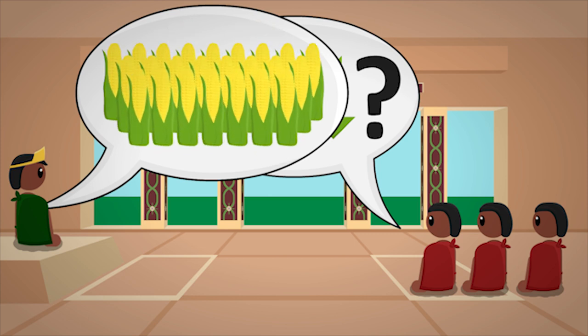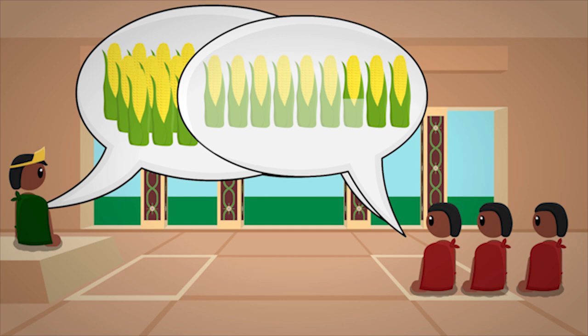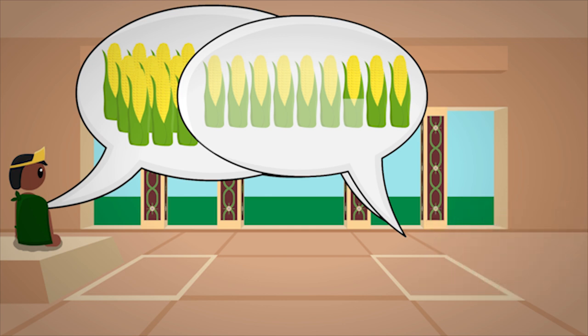So he increased taxes even further. These taxes would take such a heavy toll on the Aztec that even the nobility had trouble getting enough to eat. Knowing that military action wasn't an option, the Aztec begrudgingly decided to pay these heavy taxes, becoming a tributary town of the kingdom of Azcapotzalco.